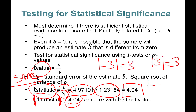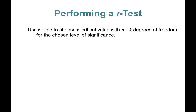If a is a positive number, then the absolute value of negative a is a. Absolute value means get rid of the negative sign. We then have to compare it with a t-critical value. This is how we perform the t-test.